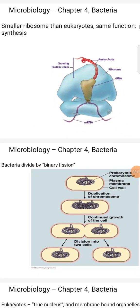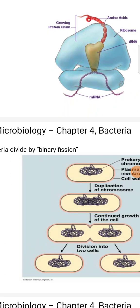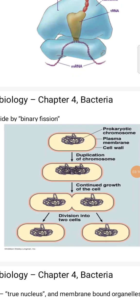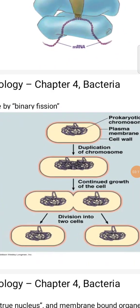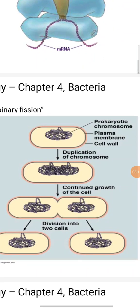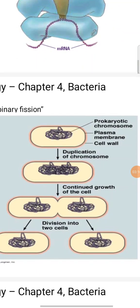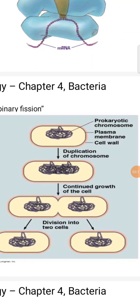Bacteria divide by binary fission. First, the prokaryotic chromosome duplicates, the plasma membrane and cell wall extend, and then the cell divides into two daughter cells.